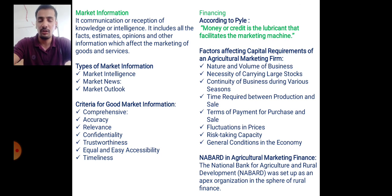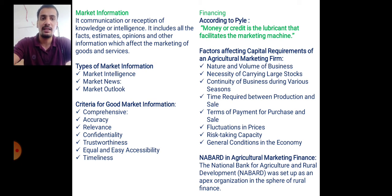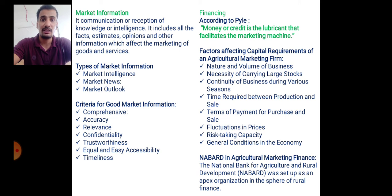Additional factors affecting capital requirements include: time required between production and sale, terms of payment for purchase and sale, fluctuation in prices, risk-taking capacity, and general conditions in the economy. These factors affect the financial requirement of the agricultural marketing system.